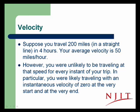This concept comes up every day in terms of velocity. Suppose you travel 200 miles in a straight line in 4 hours. Your average velocity is 50 miles per hour. However, it's unlikely that you are traveling at exactly the speed of 50 miles per hour at every instant during your trip. In particular, you are likely traveling with an instantaneous velocity of zero at the very start and a zero velocity at the very end. And in the middle, you might have been going faster than 50 miles per hour. That represents the difference between the average velocity and the instantaneous velocity, which is what you see on your speedometer in your car.